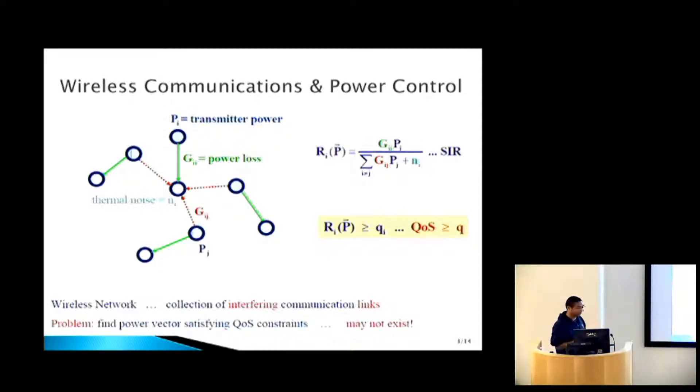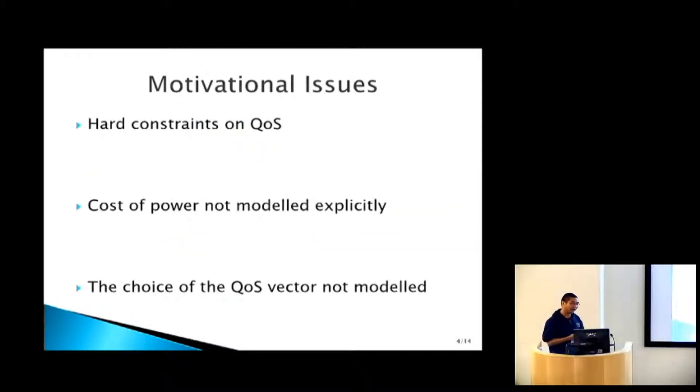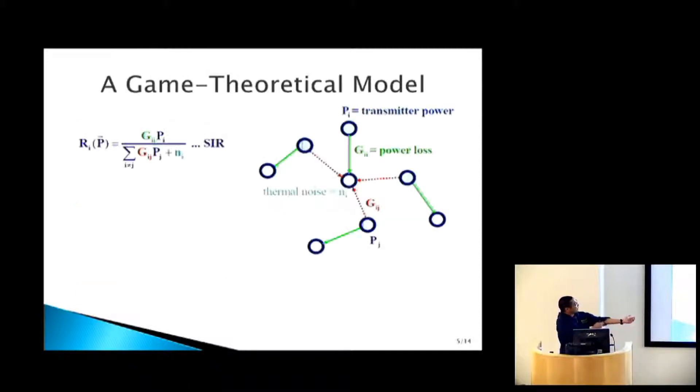I'm taking a different angle here. If you look at this formulation, there are actually a few issues that this model does not address. First, there's a hard constraint on quality of service, but in reality, the quality of service constraint may not be hard. Also, the cost of power is not modeled explicitly, which is important. And finally, it's not clear how the quality of service vector is even chosen. Sometimes if you're able to reduce your power significantly, you may be able to tolerate lower signal-to-interference ratio.